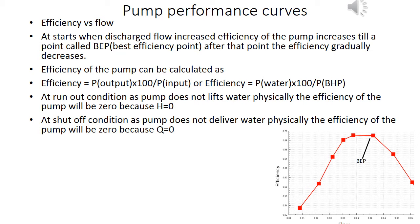At start, as discharged flow increases, the efficiency of the pump increases until a point called the best efficiency point (BEP); after that point efficiency gradually decreases. At run out condition, as the pump does not physically lift water, efficiency is zero because H equals zero. At shut off condition, as the pump does not physically deliver water, efficiency is zero because Q equals zero.